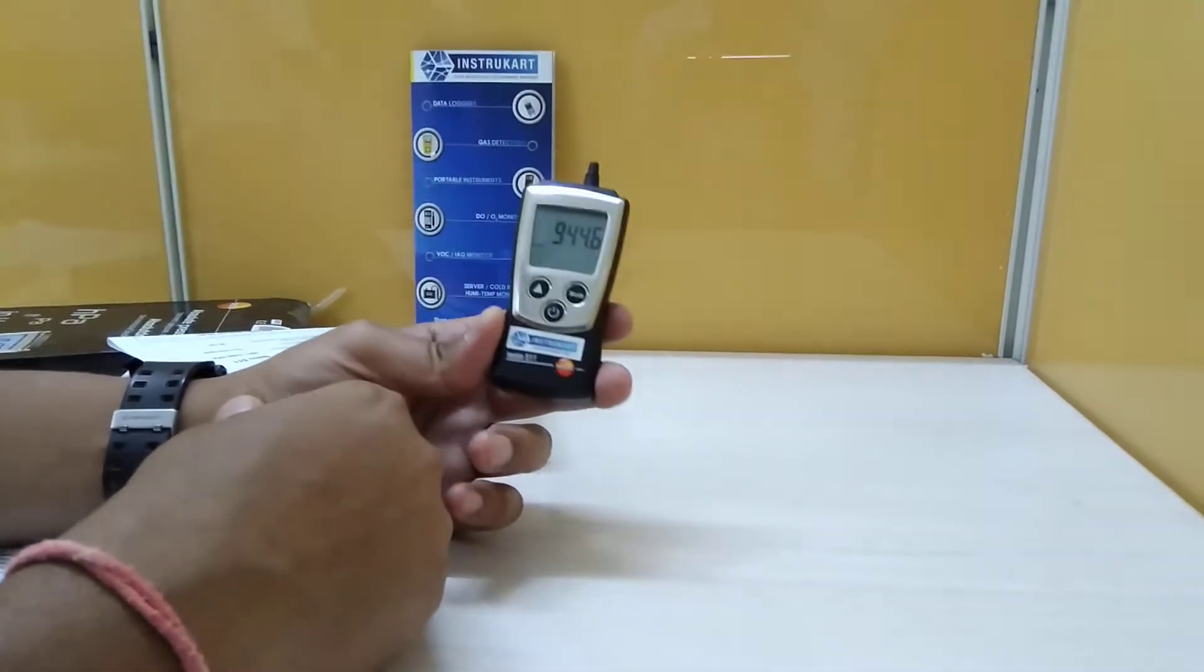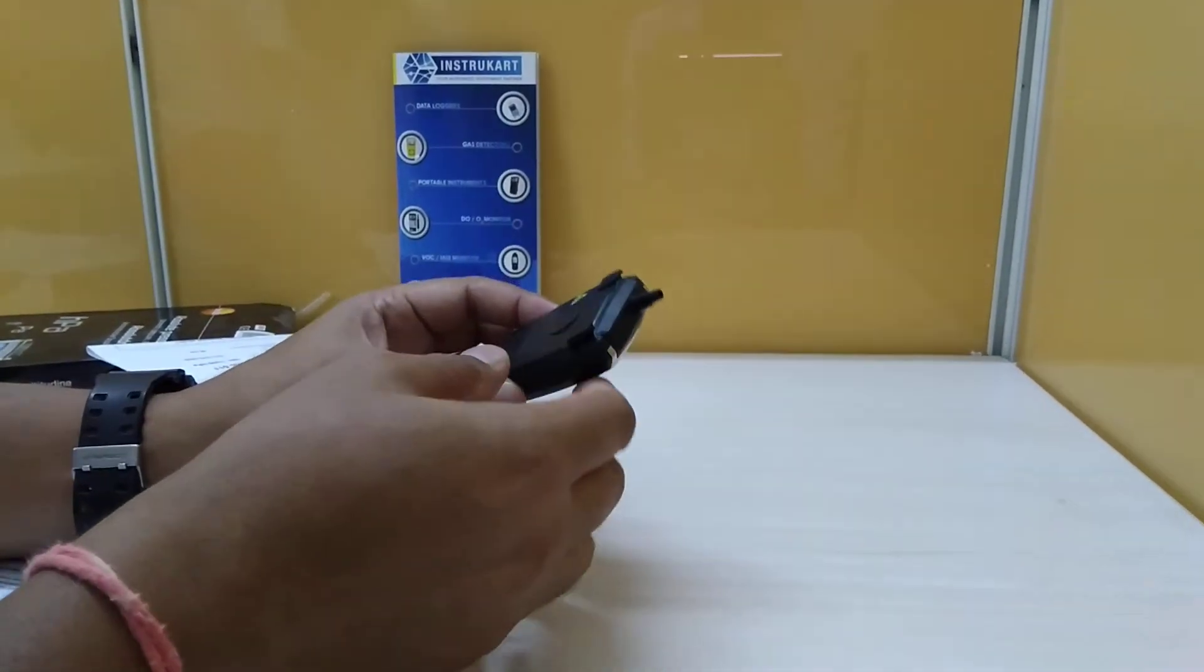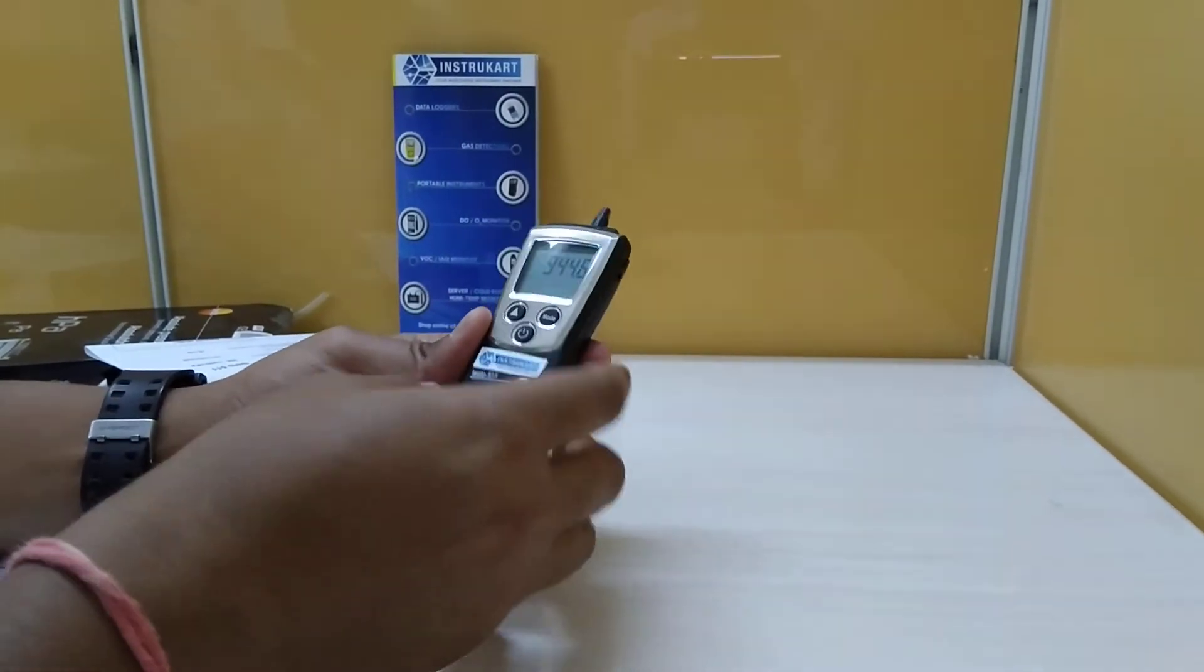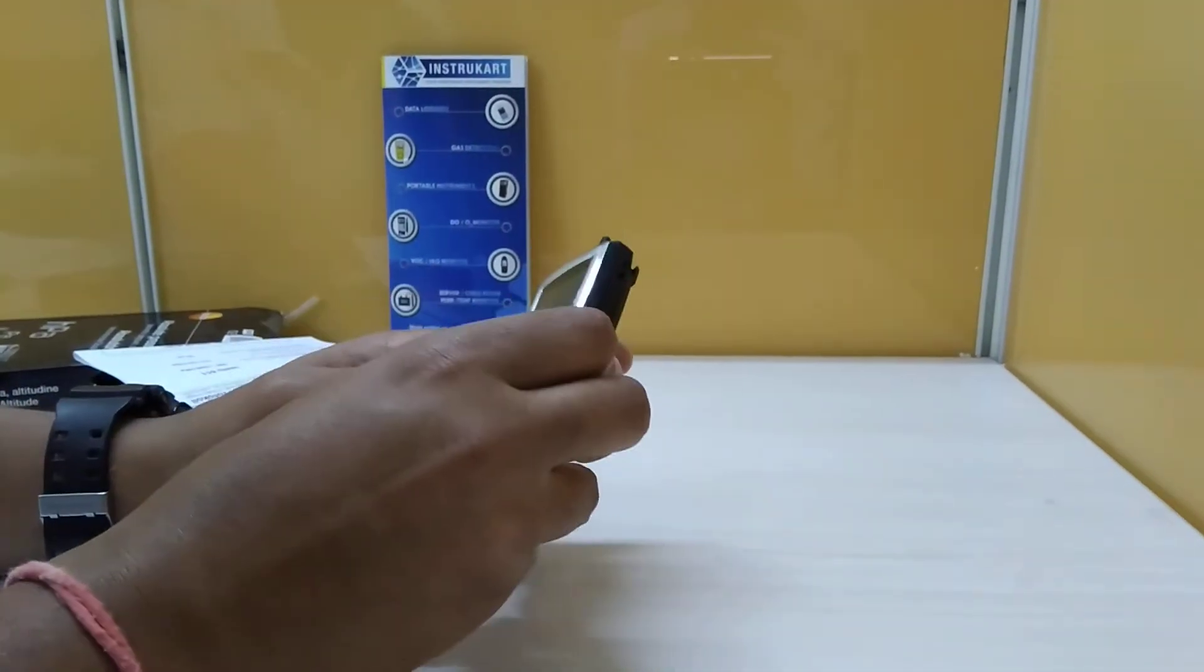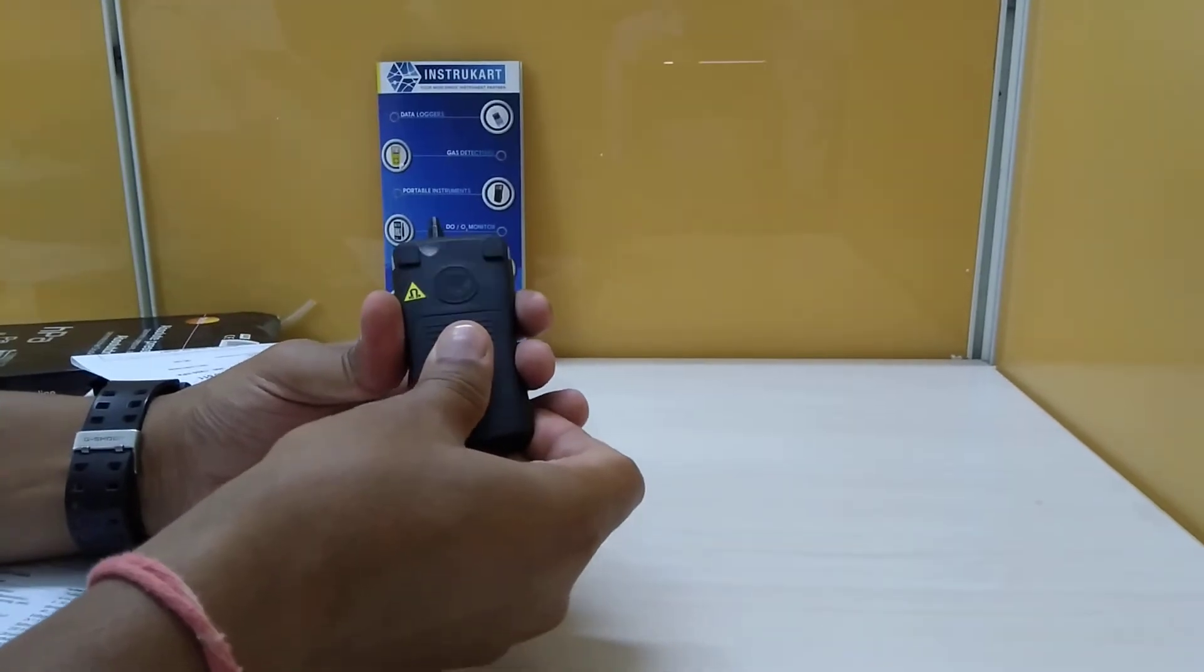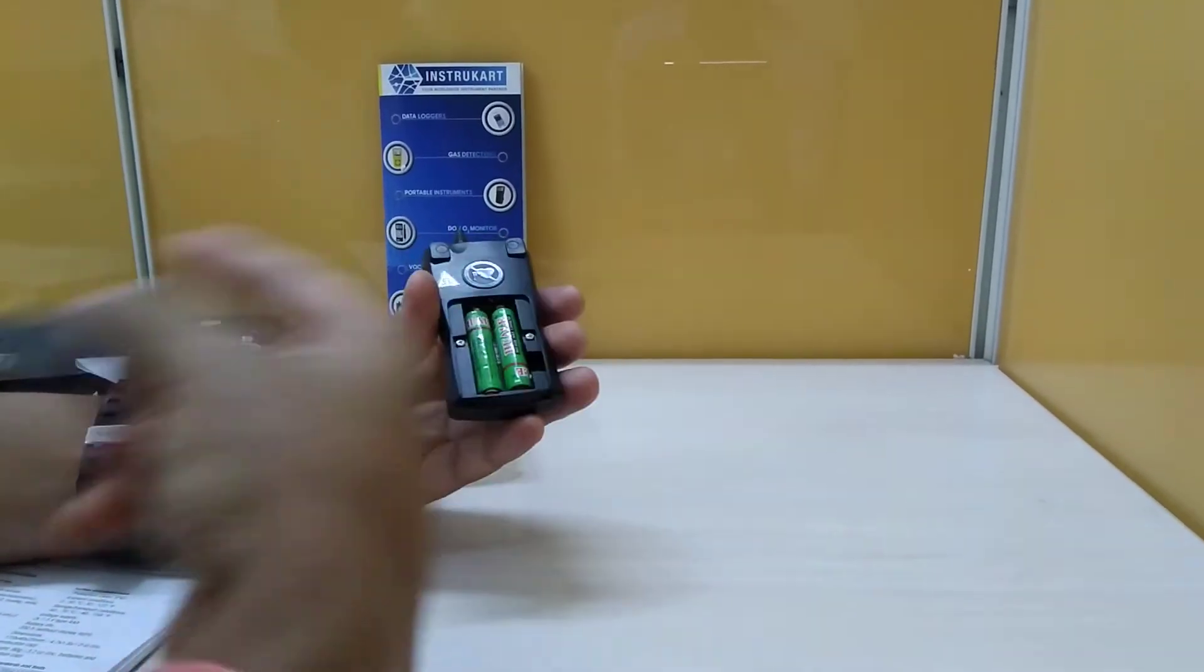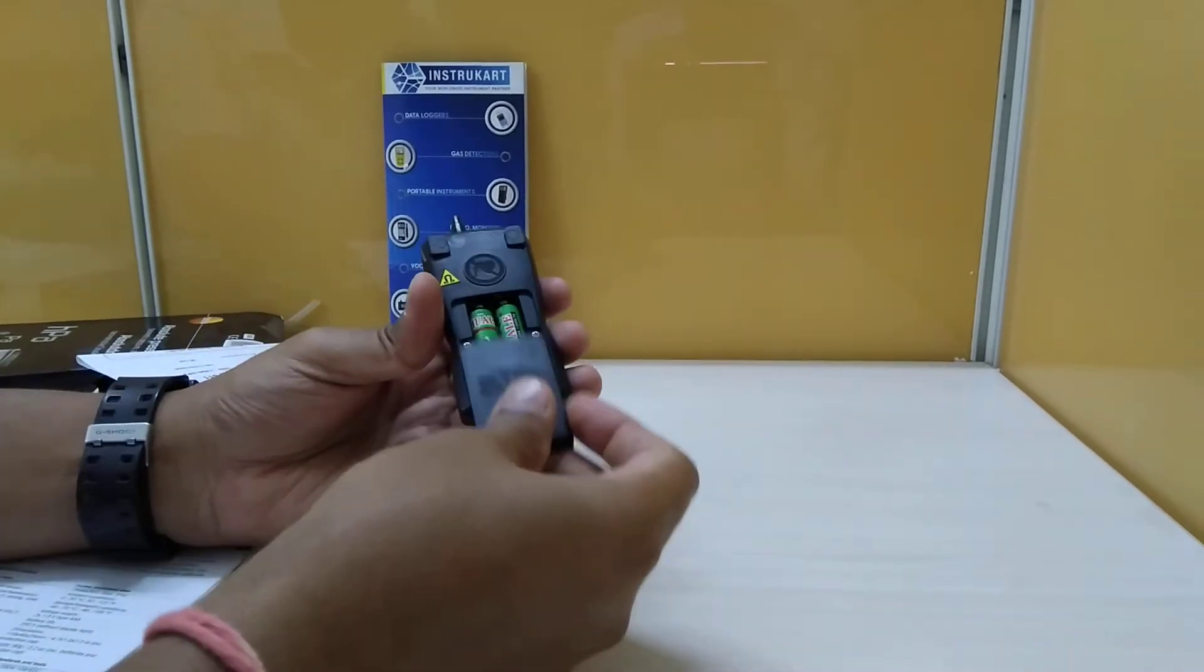The measuring rate is 0.5 seconds, which is very fast. This has a protection class of IP40 and uses two AAA cells. The ambient condition is 0 to 50 degrees.